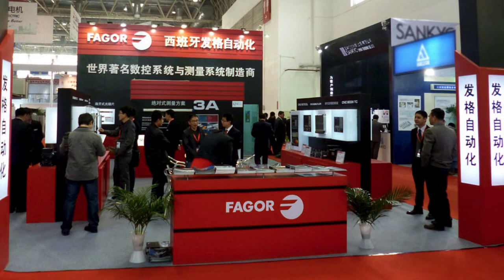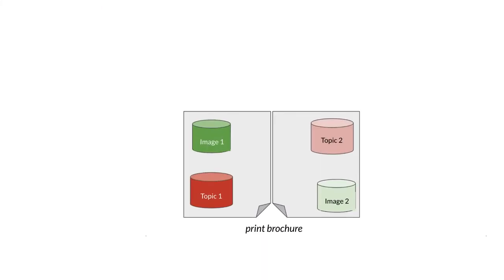Now let's see how this works in practice for Fagor Automation, a company in Spain that sells digital equipment used in factories. They create print brochures to hand out at trade shows for each of their 10 different products, and they have to translate each into at least 10 different languages because their potential customers have factories across the globe. I'll simplify by assuming the English language brochure for one product called Quercus includes two different topics and two different images.